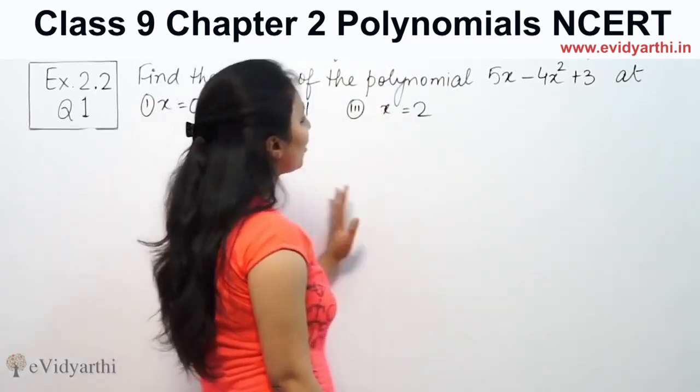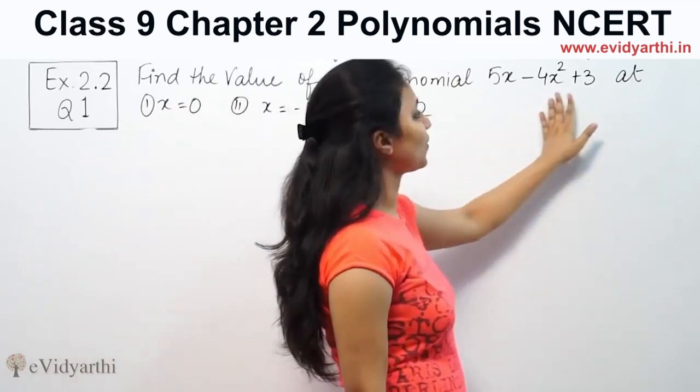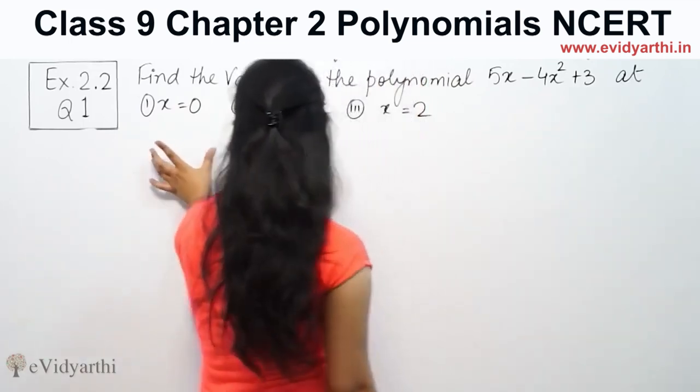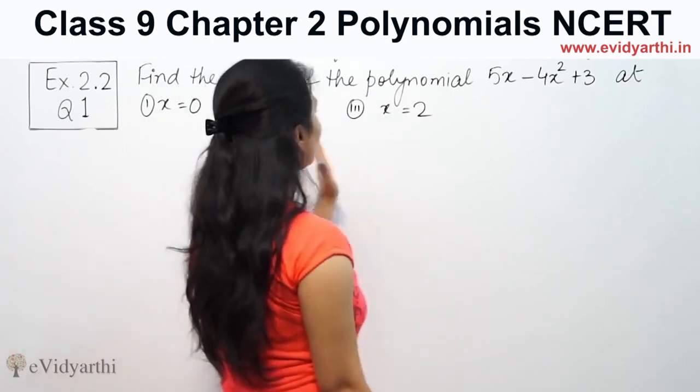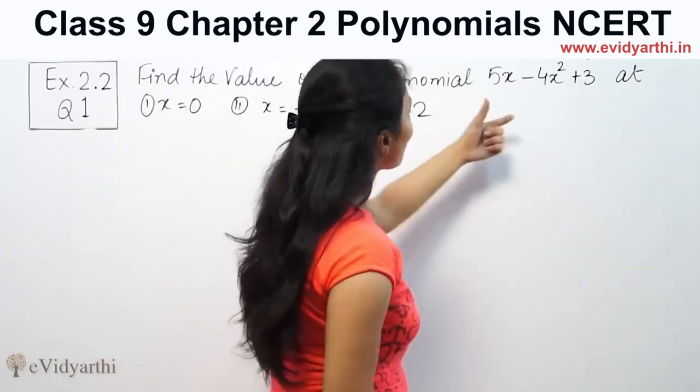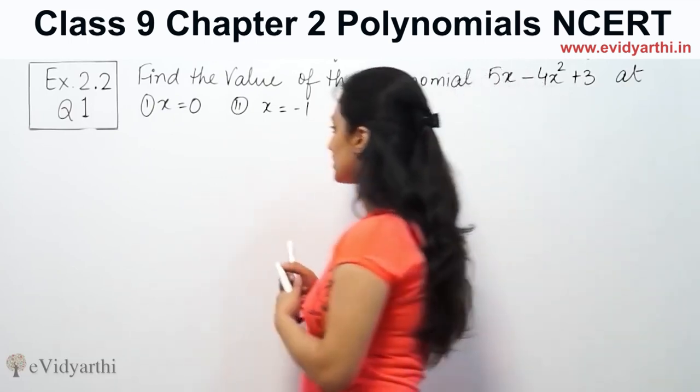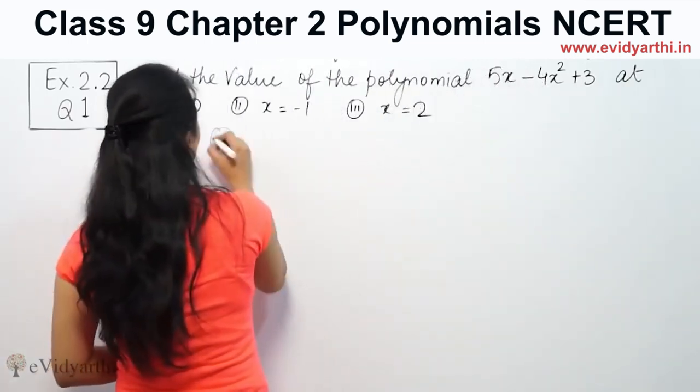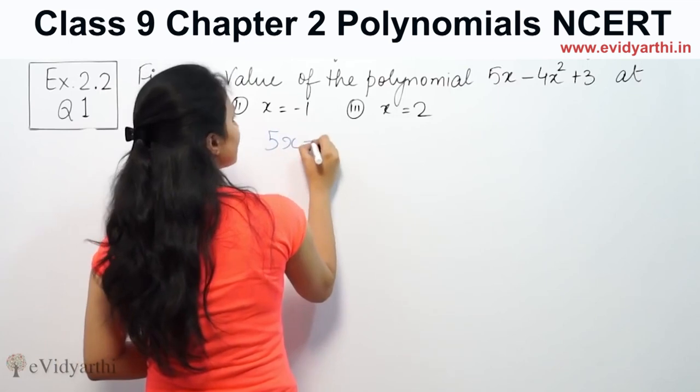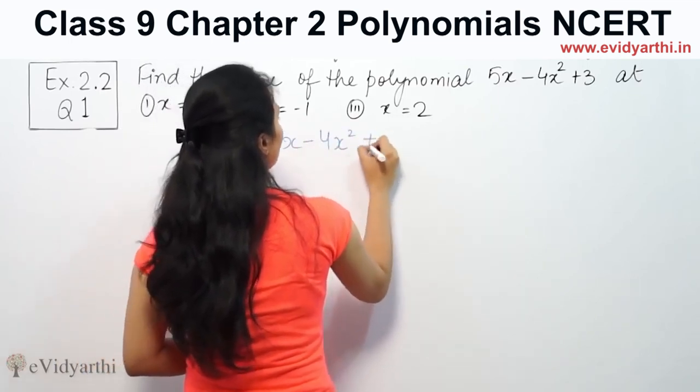The question says: find the value of the polynomial 5x minus 4x² plus 3 at x equals 0, x equals minus 1, and x equals 2.